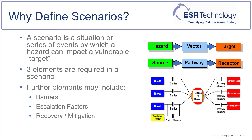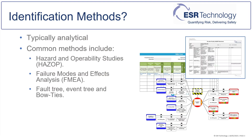In this module, we are most concerned with the scenarios that result in major accidents. The identification of how things can go wrong is an important stage of the risk assessment process, as accidents can only be prevented by anticipating how they can occur.